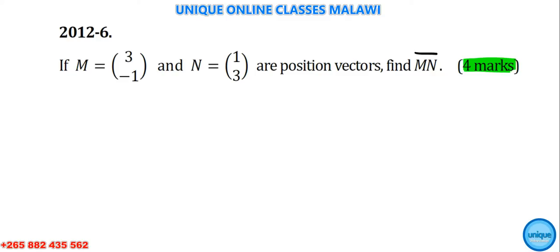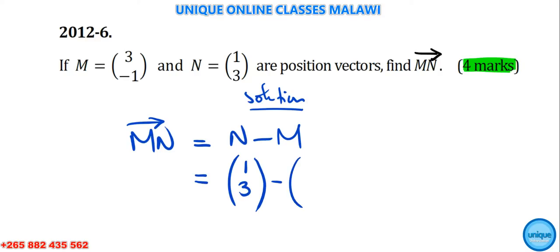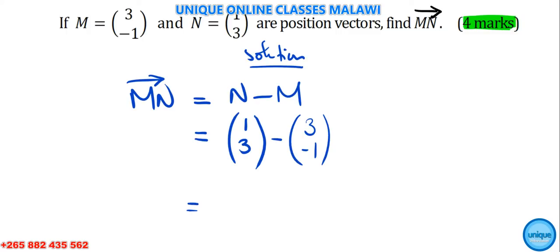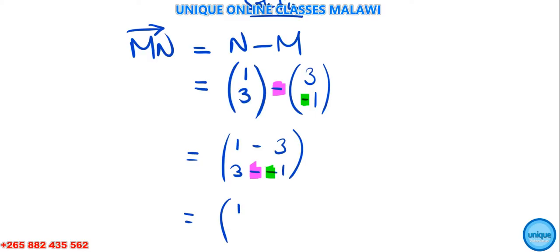Solution: MN equals N minus M. So that would be (1, 3) minus (-3, 1). Removing the brackets, it will be 1 minus -3 and 3 minus 1. The minus sign changes this one and this one, so overall the sign becomes positive.